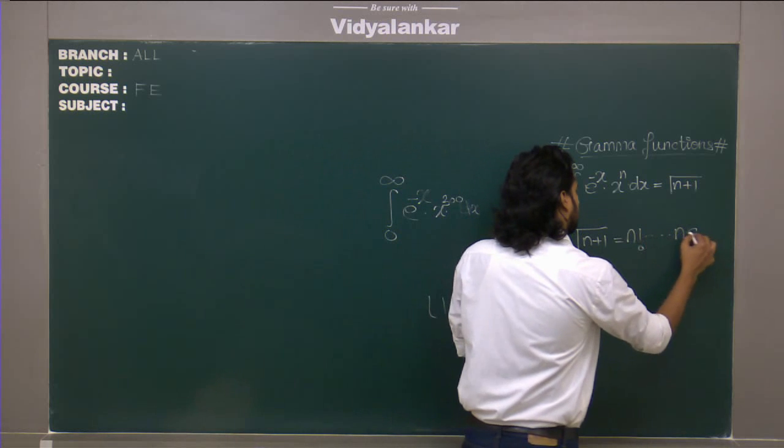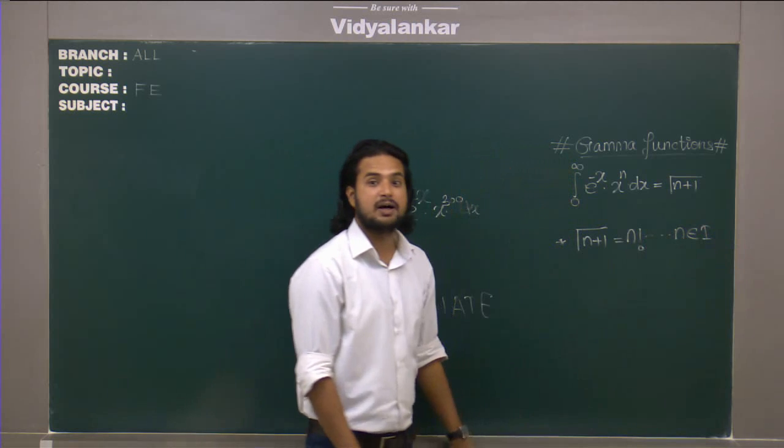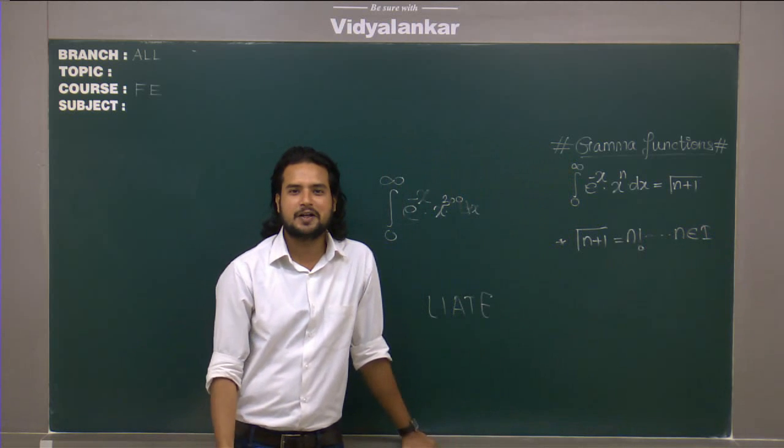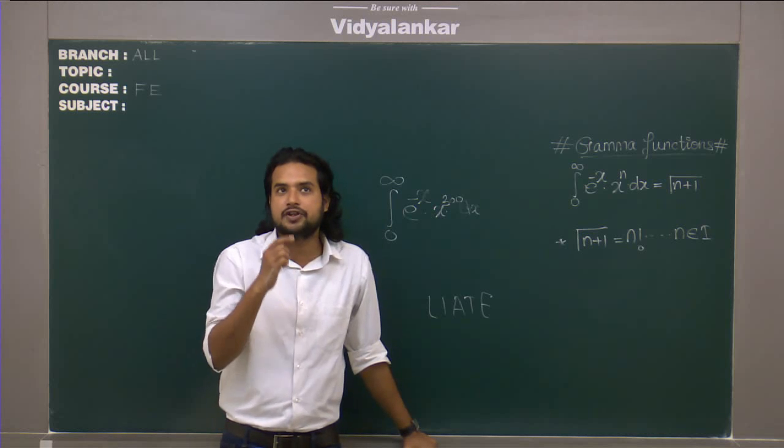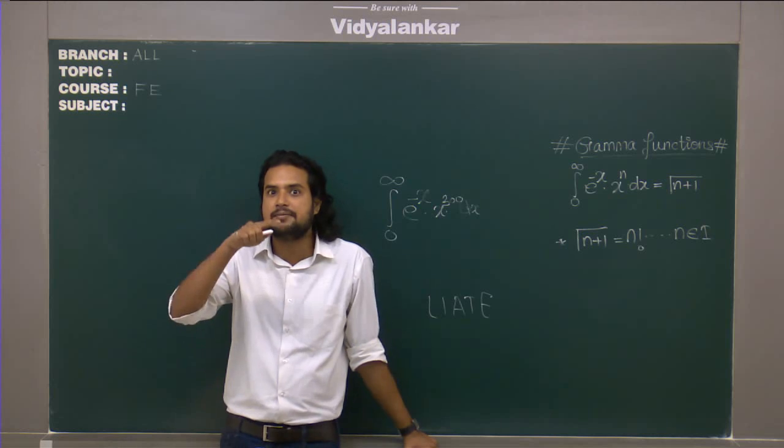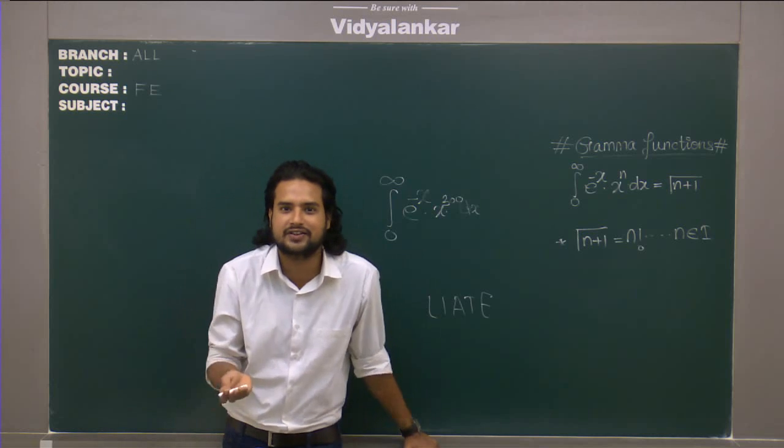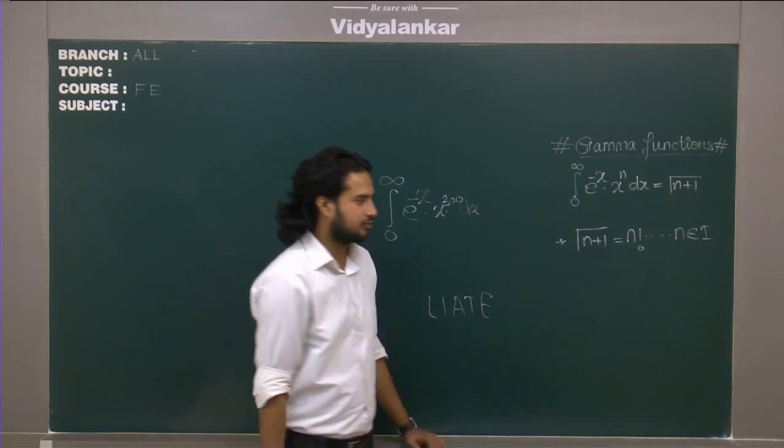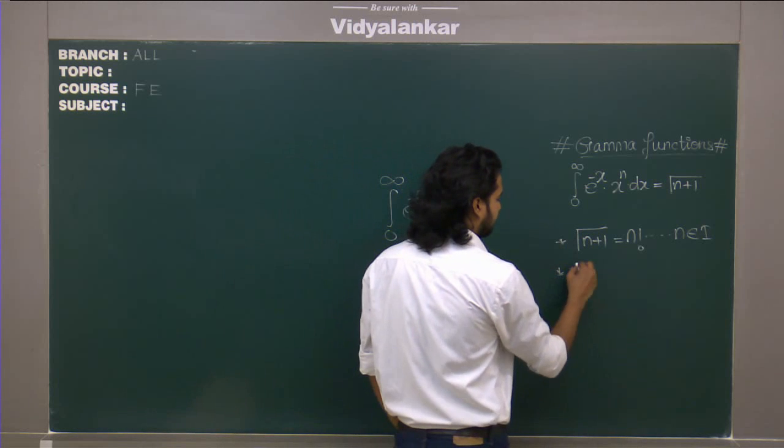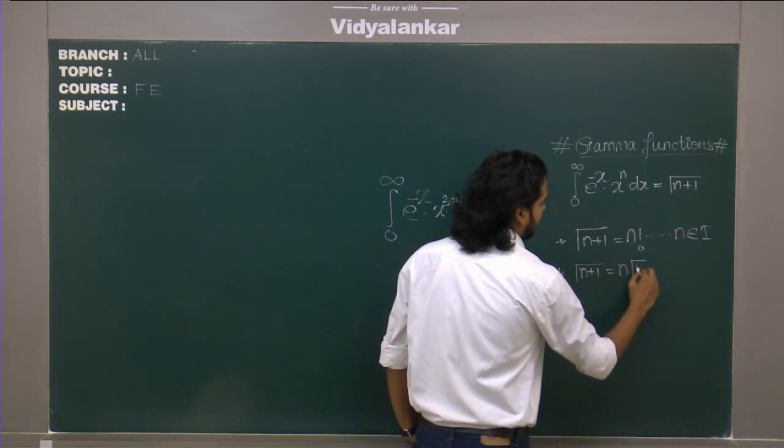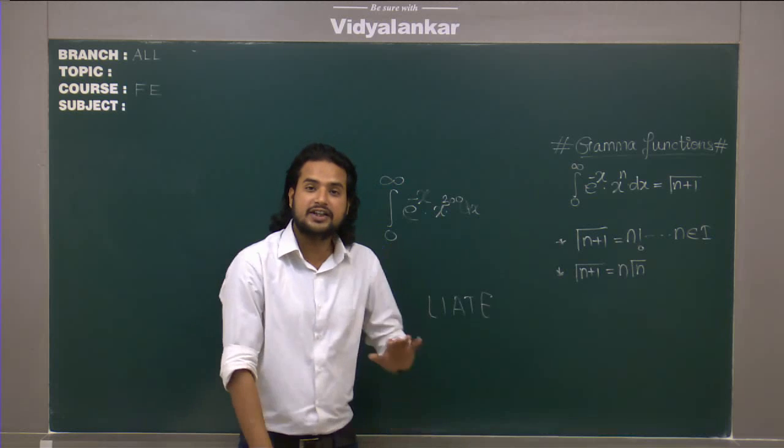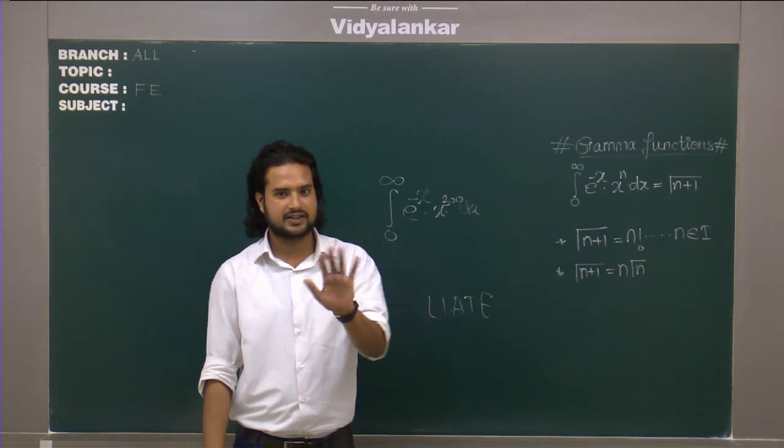But what if I give you a fraction like say gamma 3 by 2? Then it becomes a bit difficult. Because gamma 3 by 2 if I remove 1, 3 by 2 minus 1 becomes 1 by 2, 1 by 2 factorial. That doesn't exist. So what I can do is I can apply this formula. Gamma n plus 1 is n gamma n. So again you have to reduce it by 1.